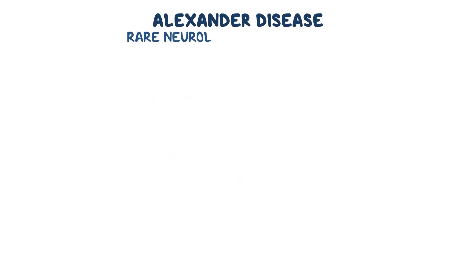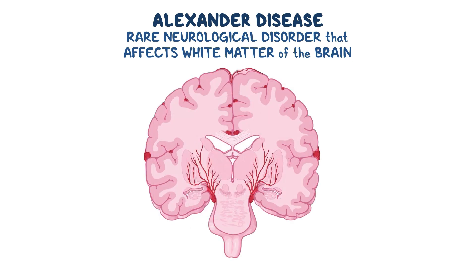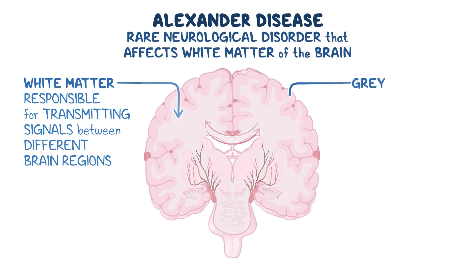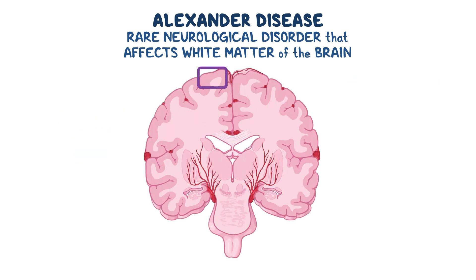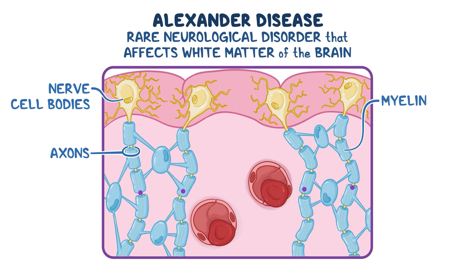Alexander disease is a rare neurological disorder that primarily affects the white matter of the brain. If we look at a cross-section of the brain, we can easily distinguish between two tissue types. First is white matter, which is the area responsible for transmitting signals between different brain regions, and gray matter. Gray matter contains nerve cell bodies. White brain matter is made up of bundles of axons, which are projections of nerve cells that carry impulses. Axons are covered in myelin, a fatty insulating layer that helps speed up electrical signals.